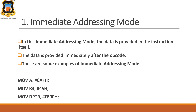The first is immediate addressing mode. This mode is named as immediate because it transfers an 8-bit data immediately to the destination operand. In this mode, data is provided in the instruction itself and is provided immediately after the opcode. The hash symbol indicates that the data is used directly. If the hash symbol is not present, that particular number will be considered as an address.